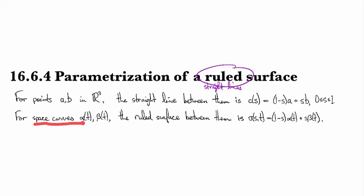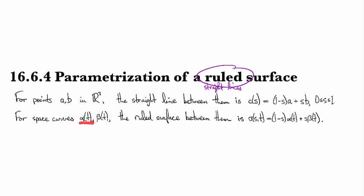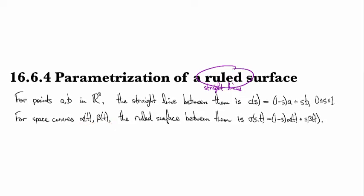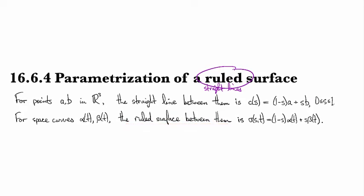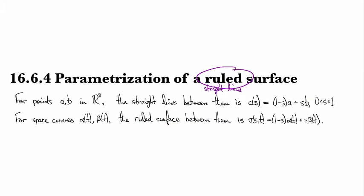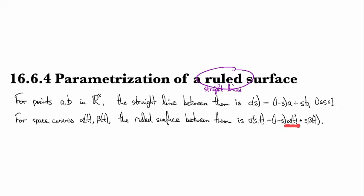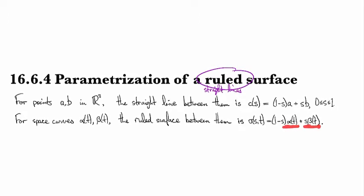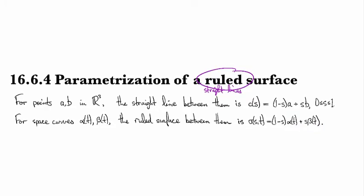The thing is, it also works for space curves. If I have α(t) as a path in space and β(t) tracing out a curve through space, then the ruled surface between them is given by this guy. I'm interpolating between, for any fixed value of t, the point on alpha and the point on beta at that value of t.